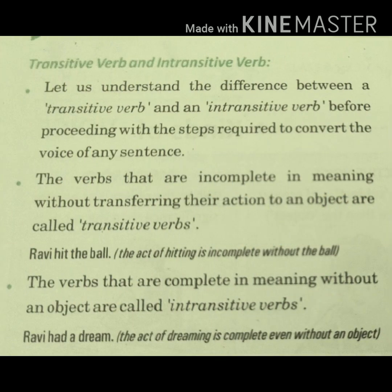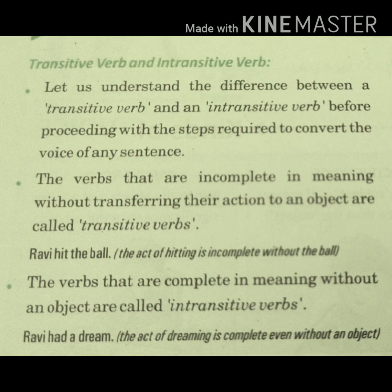Let us understand the difference between transitive and intransitive verbs, which is very important before proceeding. Verbs that are incomplete in meaning without transferring their action to an object are called transitive verbs — for example, 'Ravi hit the ball'; the act of hitting is incomplete without the ball. Verbs that are complete in meaning without an object are called intransitive verbs — for example, 'Ravi had a dream'; the act of dreaming is complete even without an object.